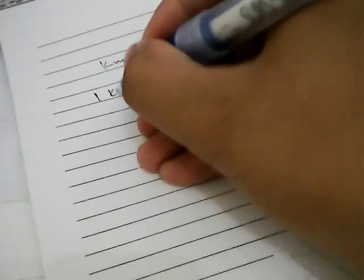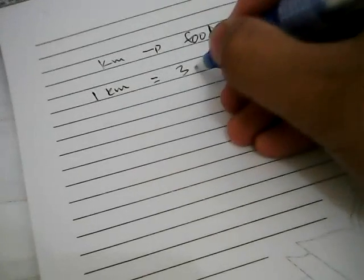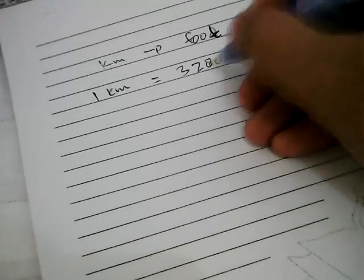Before you convert the kilometers to foot, you need to know that one kilometer is equal to 3,280.84 foot.